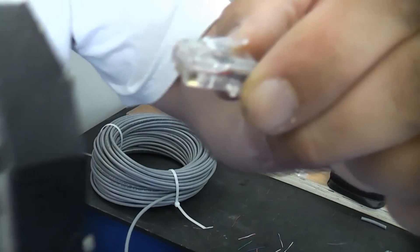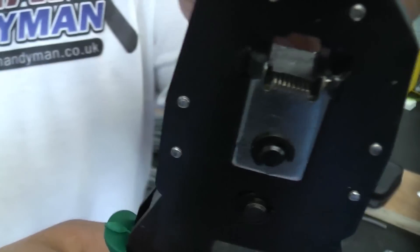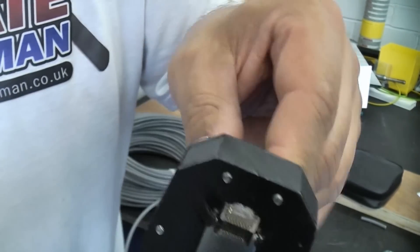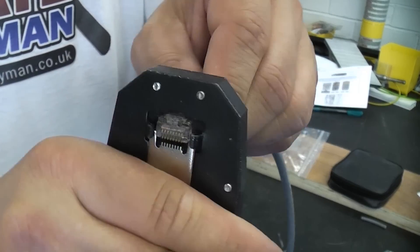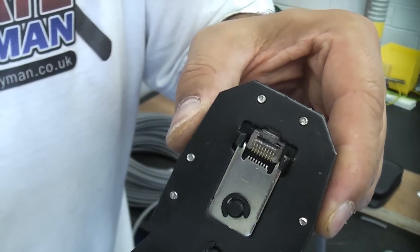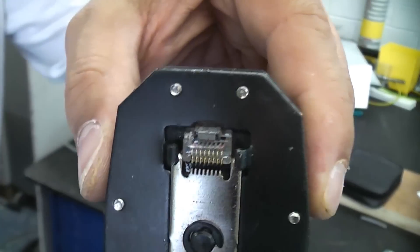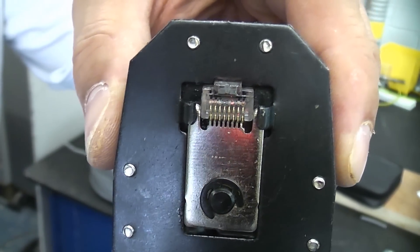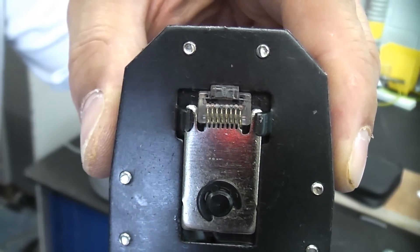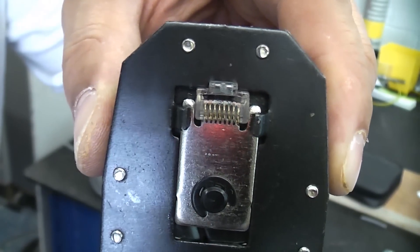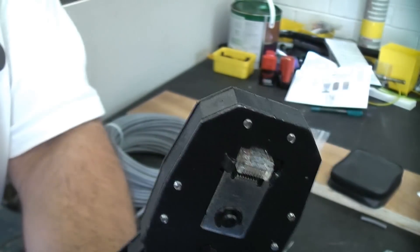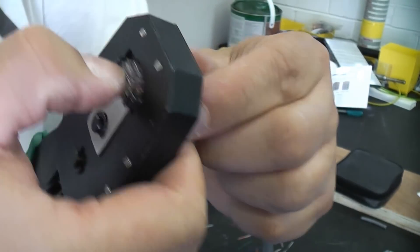We now just need to place that into the crimping pliers until it's all the way in like that. Then we need to squeeze the handles on the crimping pliers and give them a good squeeze. You can then pull that out.